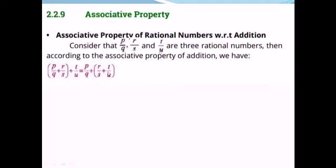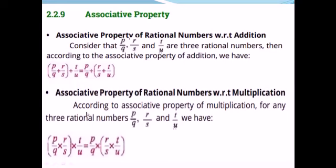The second property is the same, with only the difference of the sign. In the first property you have addition, and in the second property you have multiplication. This is the associative property of rational numbers with respect to multiplication — the same property, but the operator is different.